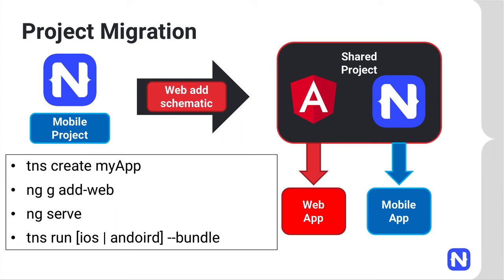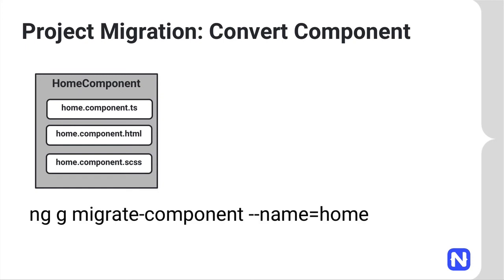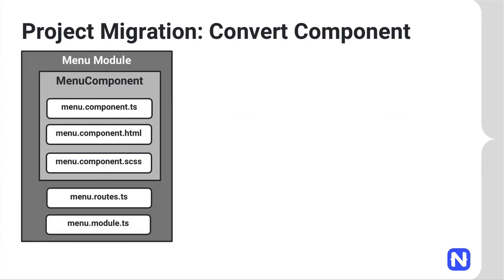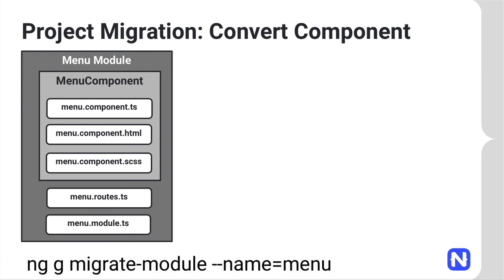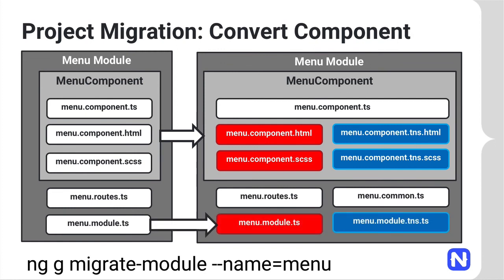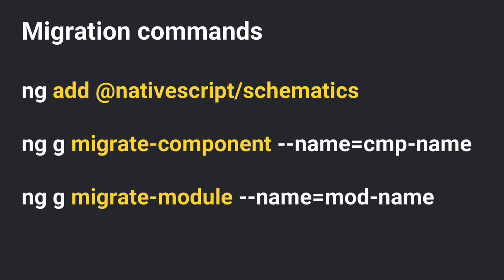The first migration step converts the structure of your project but doesn't migrate your modules or components just yet. For that, there's a separate set of schematics. If you have a home component that is web-only, you can run ng migrate component and pass its name as a parameter, and the schematic will convert it into a code-sharing structure. Similarly, if you have a module with multiple components, you can run ng migrate module, give it a name, and it will migrate each component and then the remaining bits of the module.